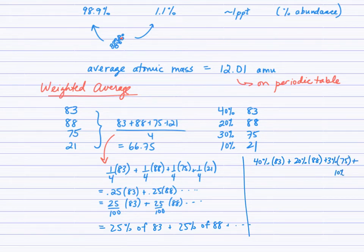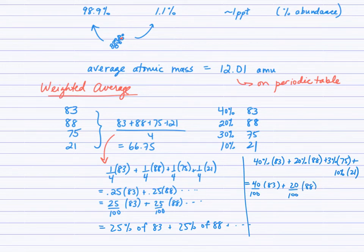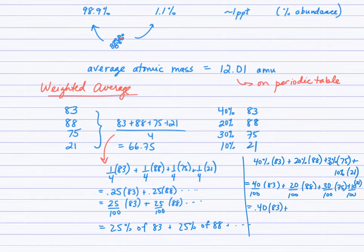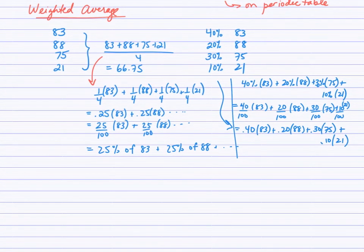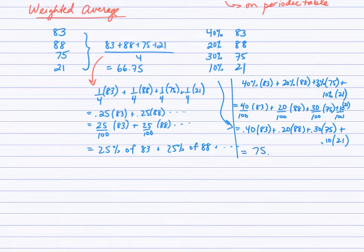Plus the 10% coming from the 21. Converting the percentages: 0.40 × 83, plus 0.20 × 88, plus 0.30 × 75, plus 0.10 × 21. Feel free to jump straight to this calculation from the data. The weighted average comes out to 75.4.